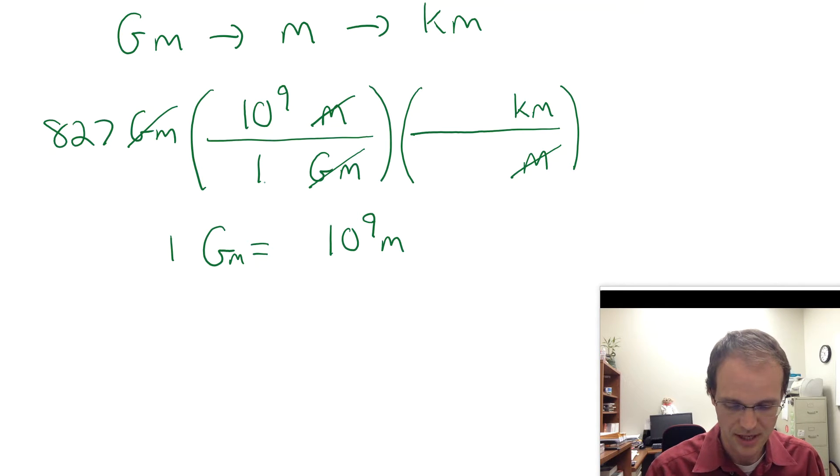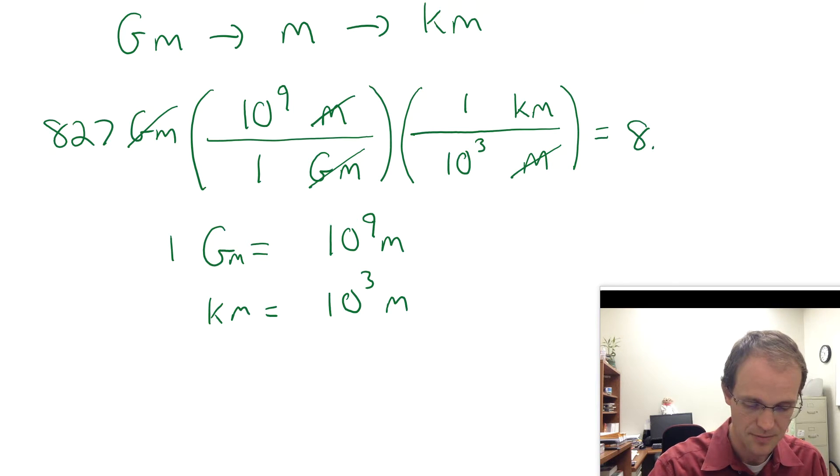On the kilometer side, we remember that kilo is defined as 10 to the third. So a kilometer is 10 to the third meters. And we can put a one and a 10 to the third there. Now if you go ahead and type that in your calculator, you've got 8.27 times 10 to the second. I think that's what 827 is. Times 10 to the ninth, so we're at 10 to the eleventh. Minus three is 10 to the eighth. And I've got 8.27 times 10 to the eighth kilometers.